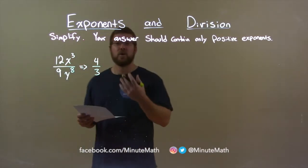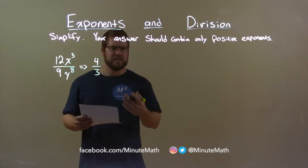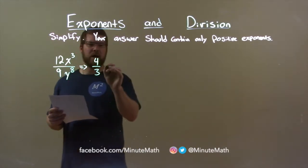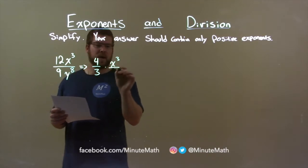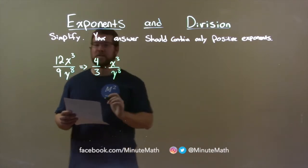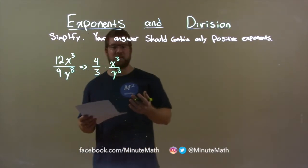Now, let's look at our variables. Well, this one's actually pretty simple. We have an x to the third power in the numerator and a y to the eighth power in the denominator. They are not like terms. We cannot simplify them anymore.